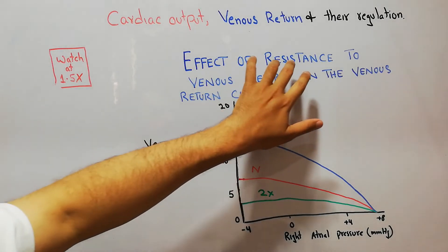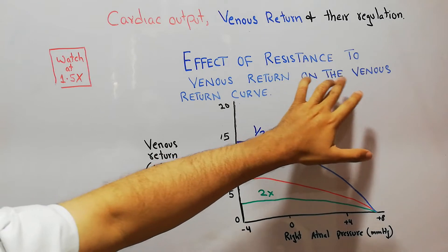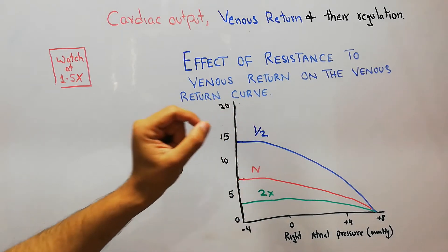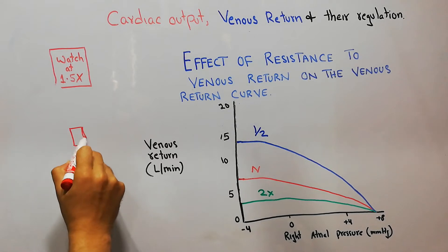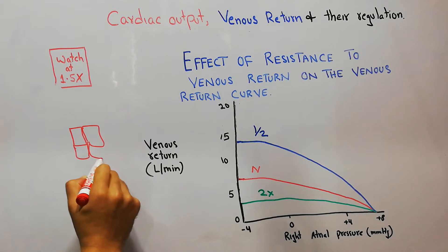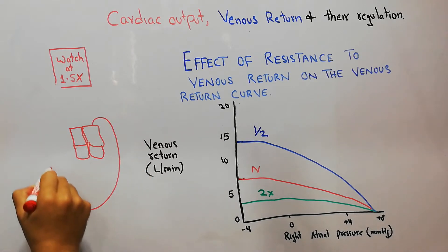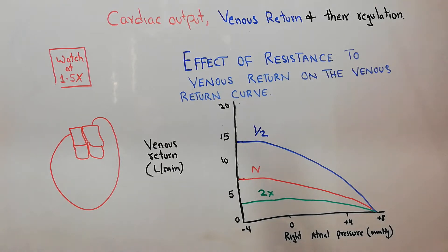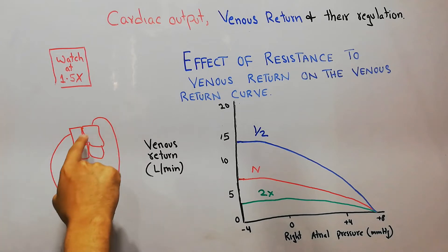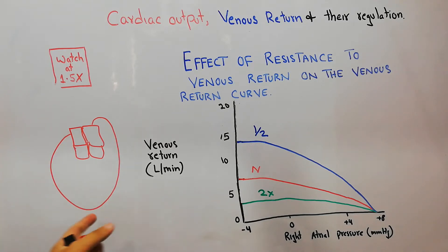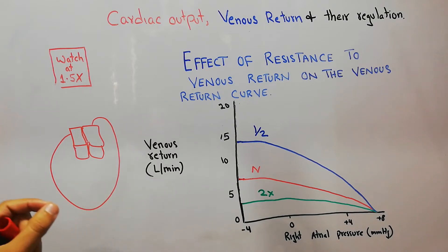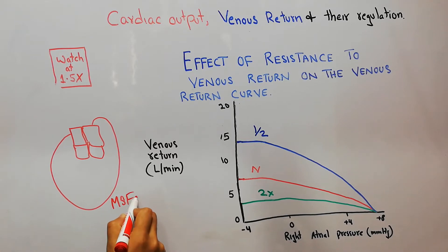Today we are going to discuss the effect of resistance to venous return on the venous return curve. When blood is returning to the heart, suppose this is the heart pumping blood into the periphery, and from the periphery the blood is returning to the heart. The pressure which is trying to bring the blood towards the heart is the mean systemic filling pressure.